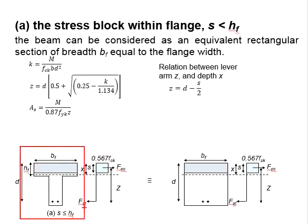The moment resistance of the section is calculated by multiplying the force by the concrete with the lever arm. The lever arm is determined by subtracting half of the height of the stress block from d, as given in the equation here.